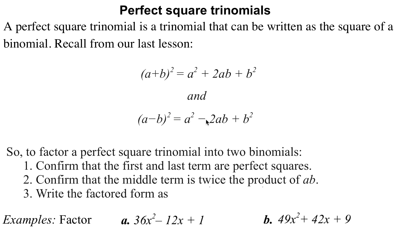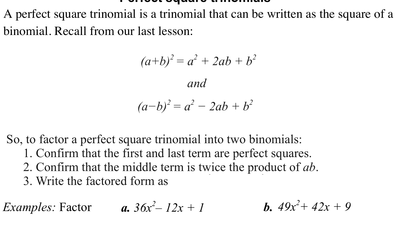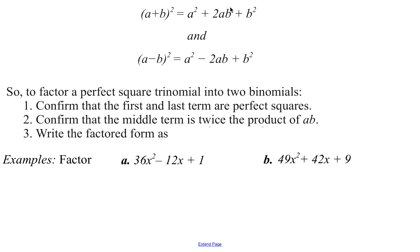To expand these, we basically square the first term and square the last term — that gives us a² and b². Then we multiply those together and double it for the middle term. The only difference is the first sign: when we have (a+b), they're both plus; for (a-b), the first sign is minus. So now we're going to work backwards — start with the trinomial and factor it into squared binomials. We need to confirm the first and last terms are perfect squares, and that the middle term is twice the product of those two terms.